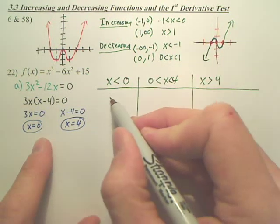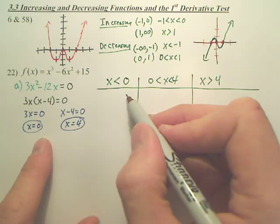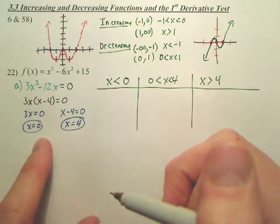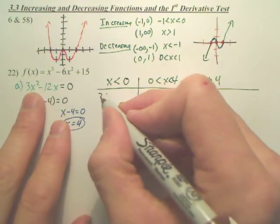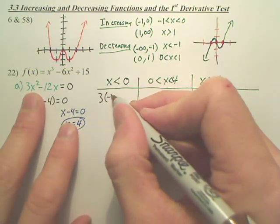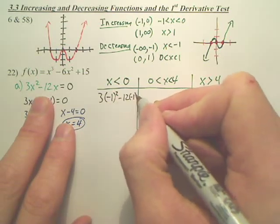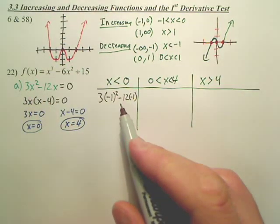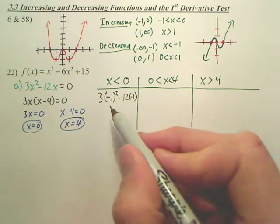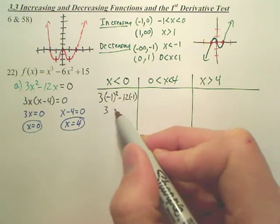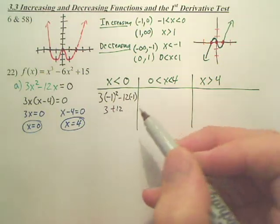So all we're going to do here is plug in any value you want that's less than 0 to the derivative. So what's the easiest number? Probably negative 1. And do you even care what the output is? No. You just care if it's negative or positive, don't you? Don't you just want to know if the slope is positive or negative? Down or up? So is this pretty obvious? This is going to be like 3 plus 12. Do you have enough to finish it?